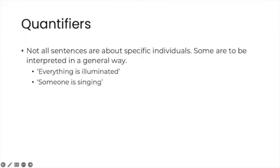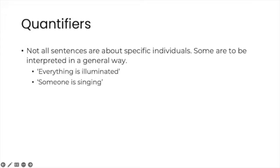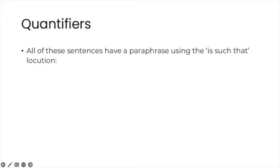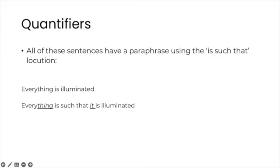Likewise, a sentence like someone is singing is not necessarily about some specific individual we might have in mind. These kinds of sentences have a paraphrase that uses the is-such-that locution. These paraphrases are a bit awkward and unnatural sounding, but they form a nice bridge between English and predicate logic. So everything is illuminated can be paraphrased as everything is such that it is illuminated. Someone is singing can be reworded as someone is such that she, he, they is singing. Take your pick.